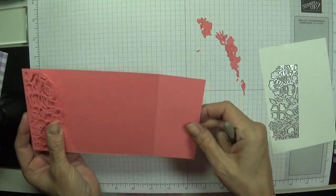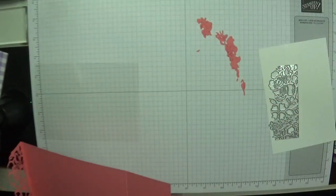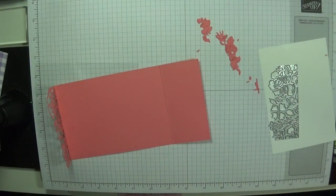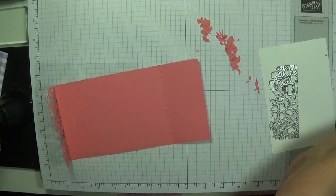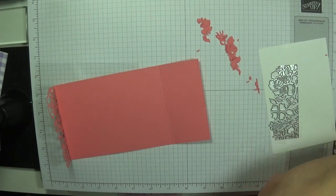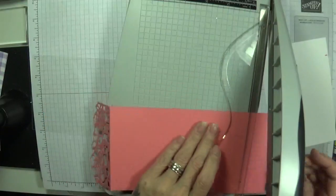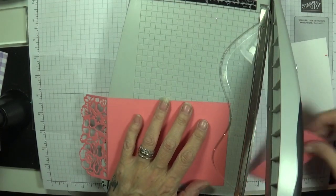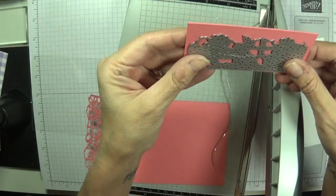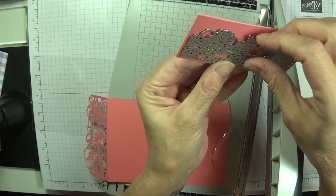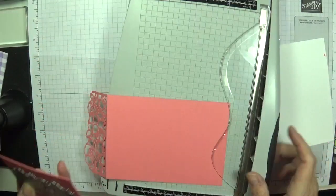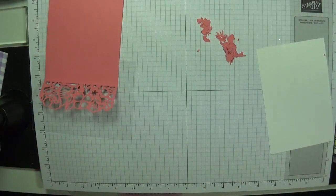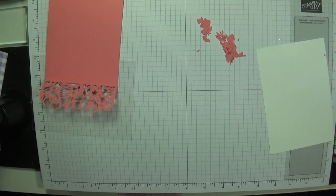Now I can take my bone folder and burnish that down because that's going to be the top of our card. Our acetate is going to get glued under there and this is going to become its layer. This piece I'm going to chop off. I'm going to use my guillotine because it gives me a cleaner cut.